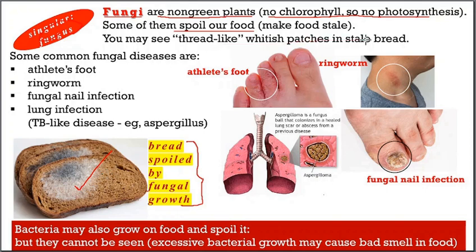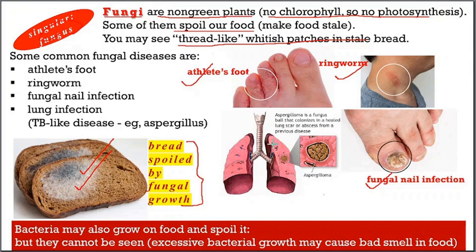Fungal diseases include athlete's foot, ringworm, and fungal nail infections. Fungi such as Aspergillus may also enter the lungs through the air passage and cause TB-like symptoms — a form of atypical TB-like disease.